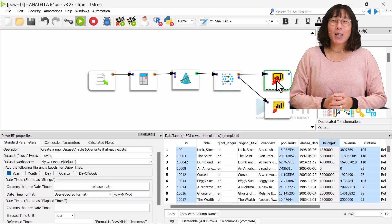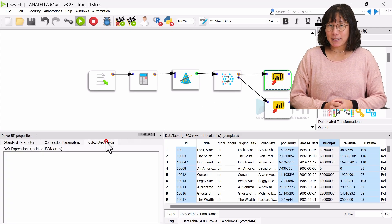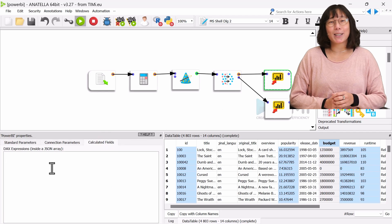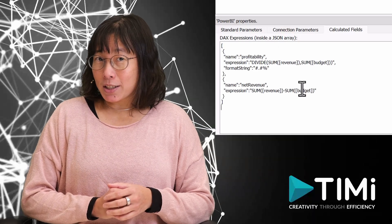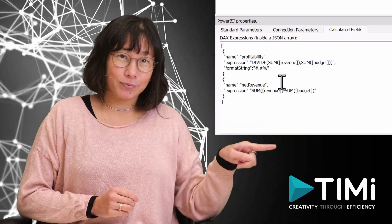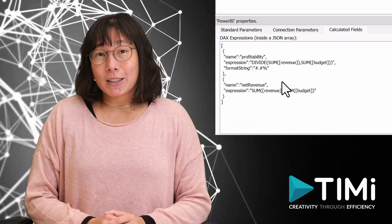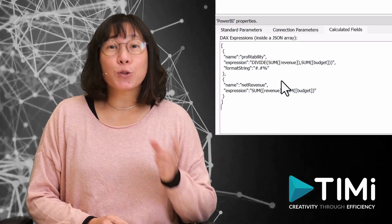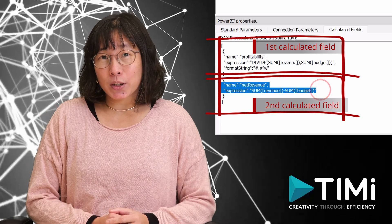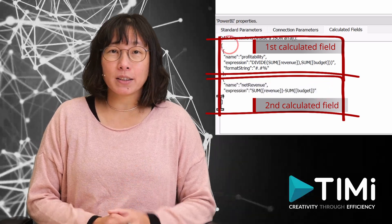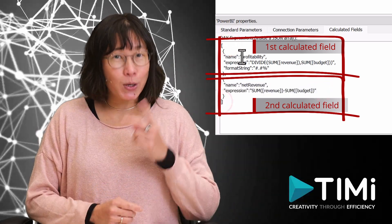Let's now create a new calculated field named profitability. To do so, let's open the calculated field panel inside Anatella and write this JSON expression. The JSON file here defines two new calculated fields.